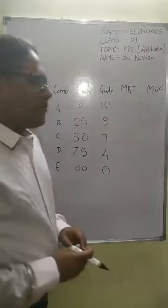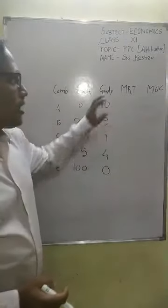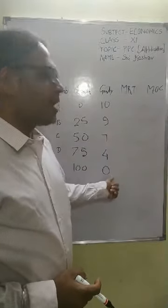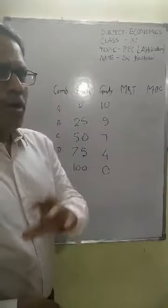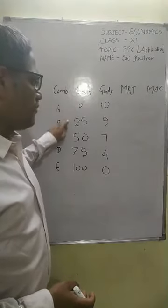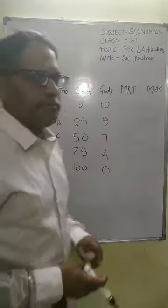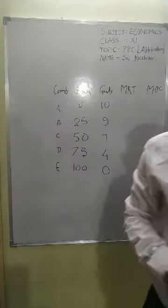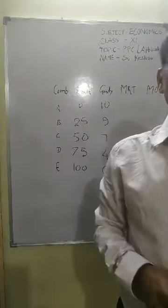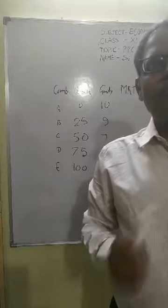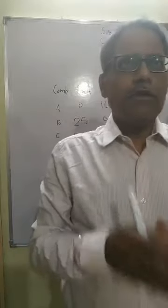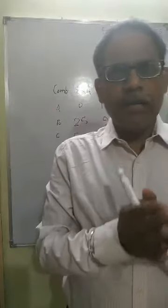This is the numerical example. Commodity Y keeps on decreasing from 10 to 9, 7, 4, and 0, while commodity X keeps on increasing in multiples of 25: 0, 25, 50, 75, and 100. With this numerical example I would like to explain the concepts of MRT and MOC, and distinguish the main difference between them.